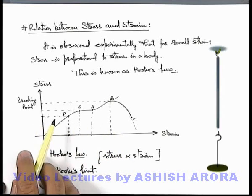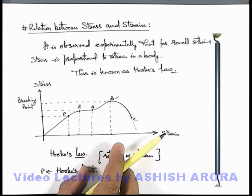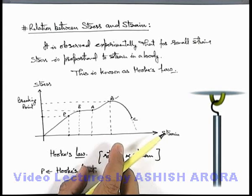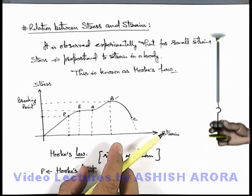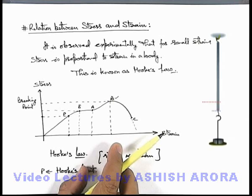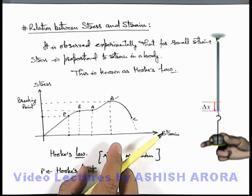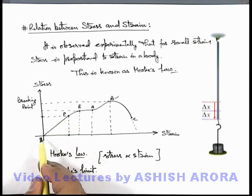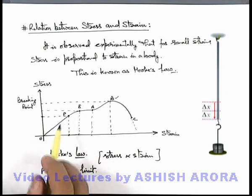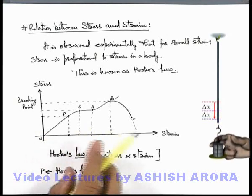Let's look at a physical situation. Here we have an elastic metal rod fixed at the topmost point, with a hook at the bottom on which we will place masses step by step. If we place a mass m, due to its weight there will be some elongation delta x in the rod. Adding another mass m produces another delta x, as it is under Hooke's limit — operating in the region from O to P — so as we increase stress, strain proportionally increases.